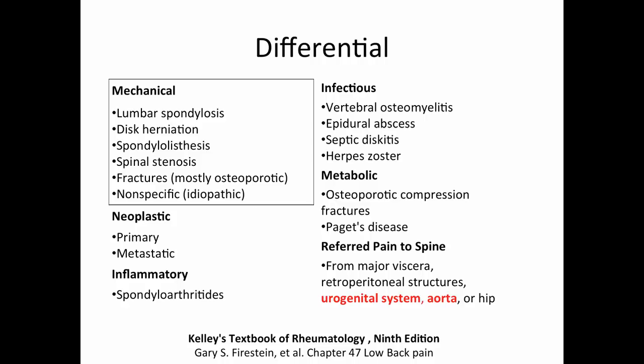The differential for low back pain is wide. Mechanical causes we'll focus on a lot, but don't forget neoplastic causes — metastatic disease to the bone. Inflammatory diseases we'll touch on briefly. Infectious causes — look for redness, swelling, fever, or in the case of herpes zoster, a rash. Metabolic causes include compression fractures and Paget's disease. Referred pain from major viscera includes the urogenital system and the aorta.